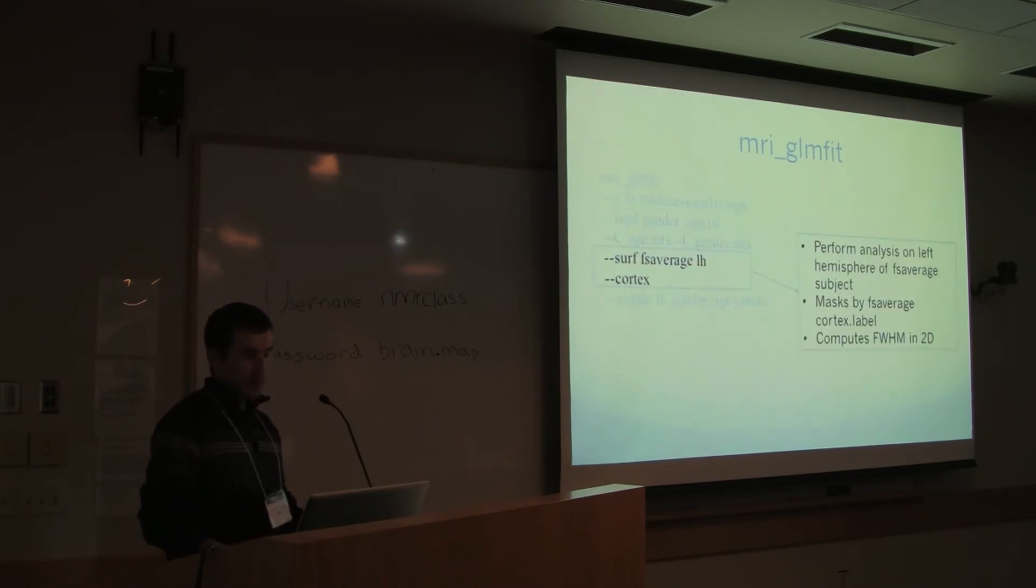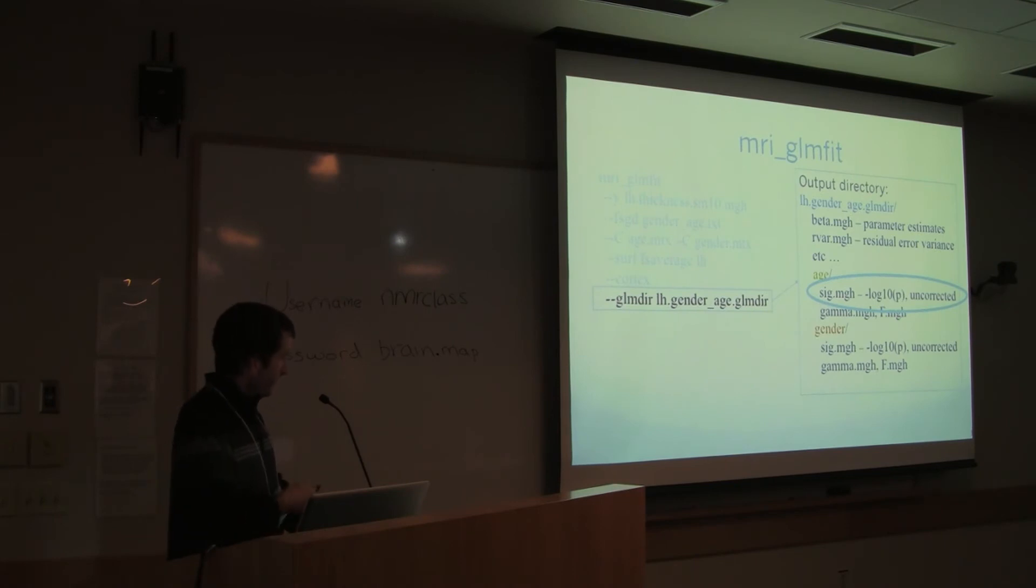So after you run MRI GLM fit, it's going to create this directory. And in this directory, you're going to have all these interesting files with beta and the variance. You can explore this later in the tutorial. And it's also going to create one subdirectory per contrast. In this case, because we have minus C age MTX and minus C gender MTX, it's going to create two subdirectories, age and gender. And within each one, we're going to have the significance map, which is what we are usually interested in.